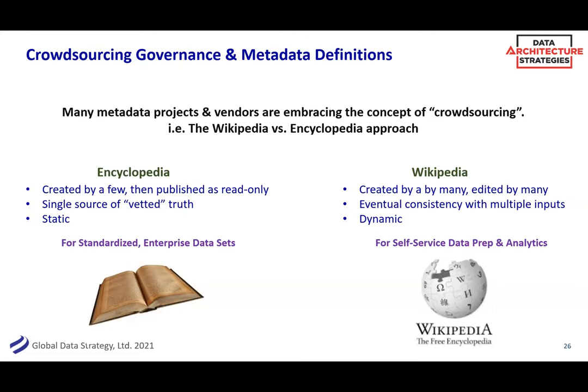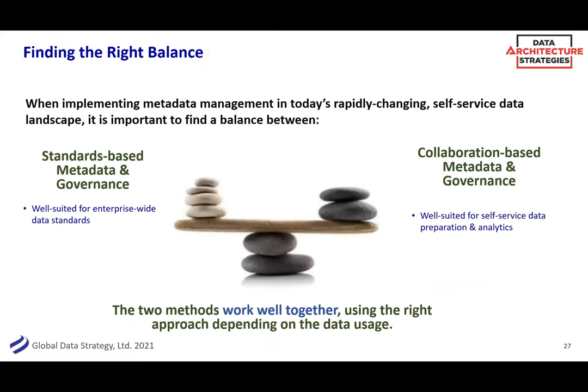The encyclopedia approach might be for your core data, your corporate reports, or your master data — not everybody gets a voice there, and if you do have a voice, it has to be vetted. Whereas the Wikipedia approach might be for self-service analytics in a certain department — you don't want to lock that down so much that someone has to log an issue request just to share a query when you're working on it. Don't overdo it or underdo it, but give that some thought. In organizations, there's a place for both. Don't over-govern things that are supposed to be more agile, and don't under-govern things that really should be very closely standardized.